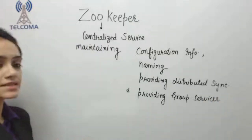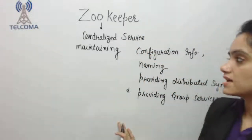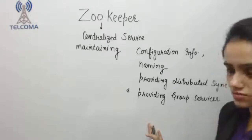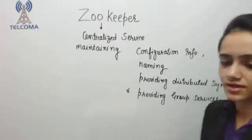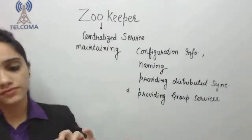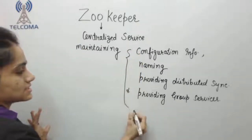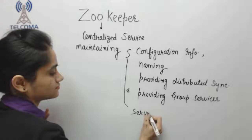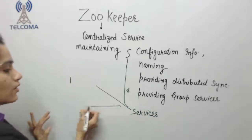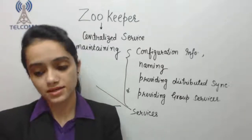ZooKeeper also provides group services. These are the main functions of ZooKeeper as a centralized service — maintaining configuration information, naming, distributed synchronization, and group services. All of these kinds of services are used in some form or another by distributed applications.